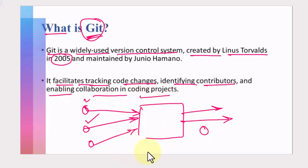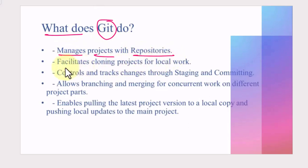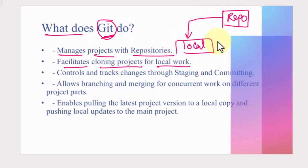Git also enables collaboration in coding projects, so multiple developers can collaborate on the same project with its help. Git is used to manage projects with a repository. It facilitates cloning of a project for local work — if we have one remote repository, we can clone that project into our local system and then work on it individually.